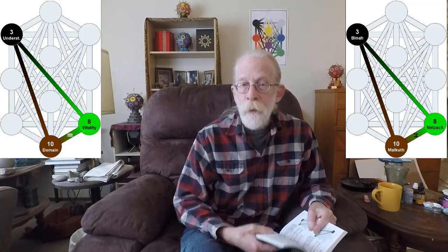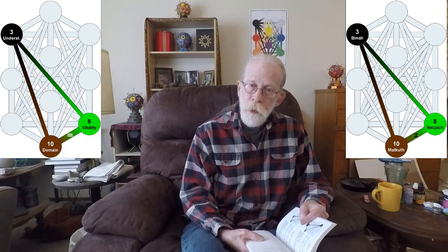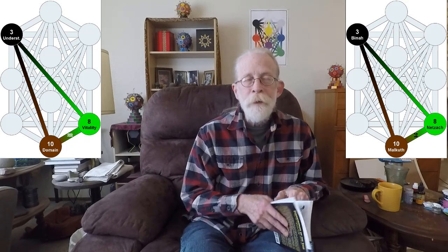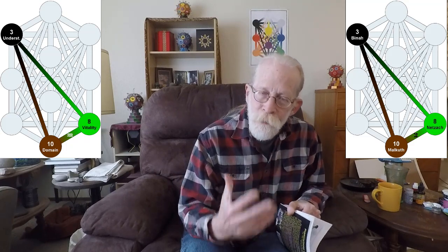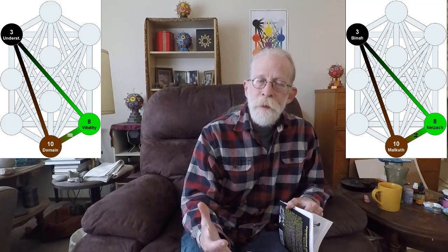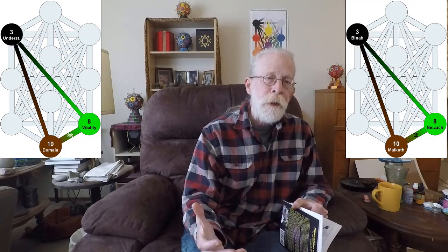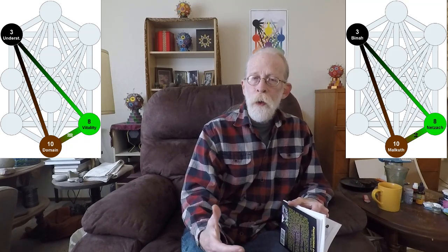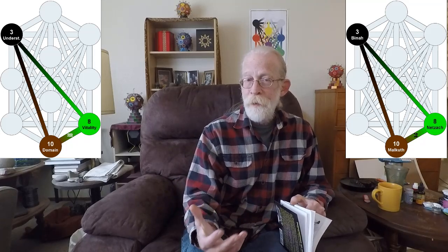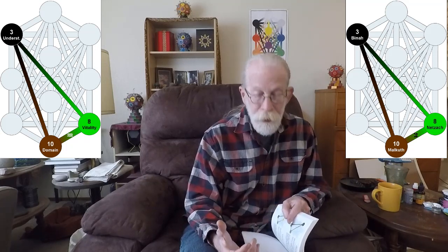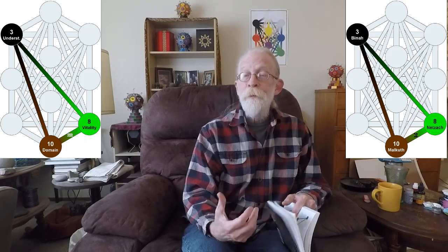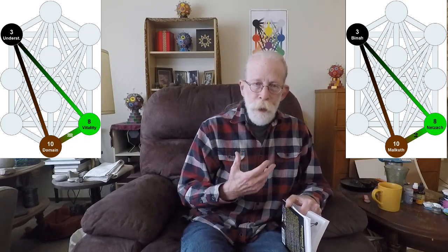Our next gate, 151, is also a triangle. And it begins in Netzach. The next four gates, the last four gates of Tzadi, are all about karmic emotions. This one is especially about just pure karmic emotions.